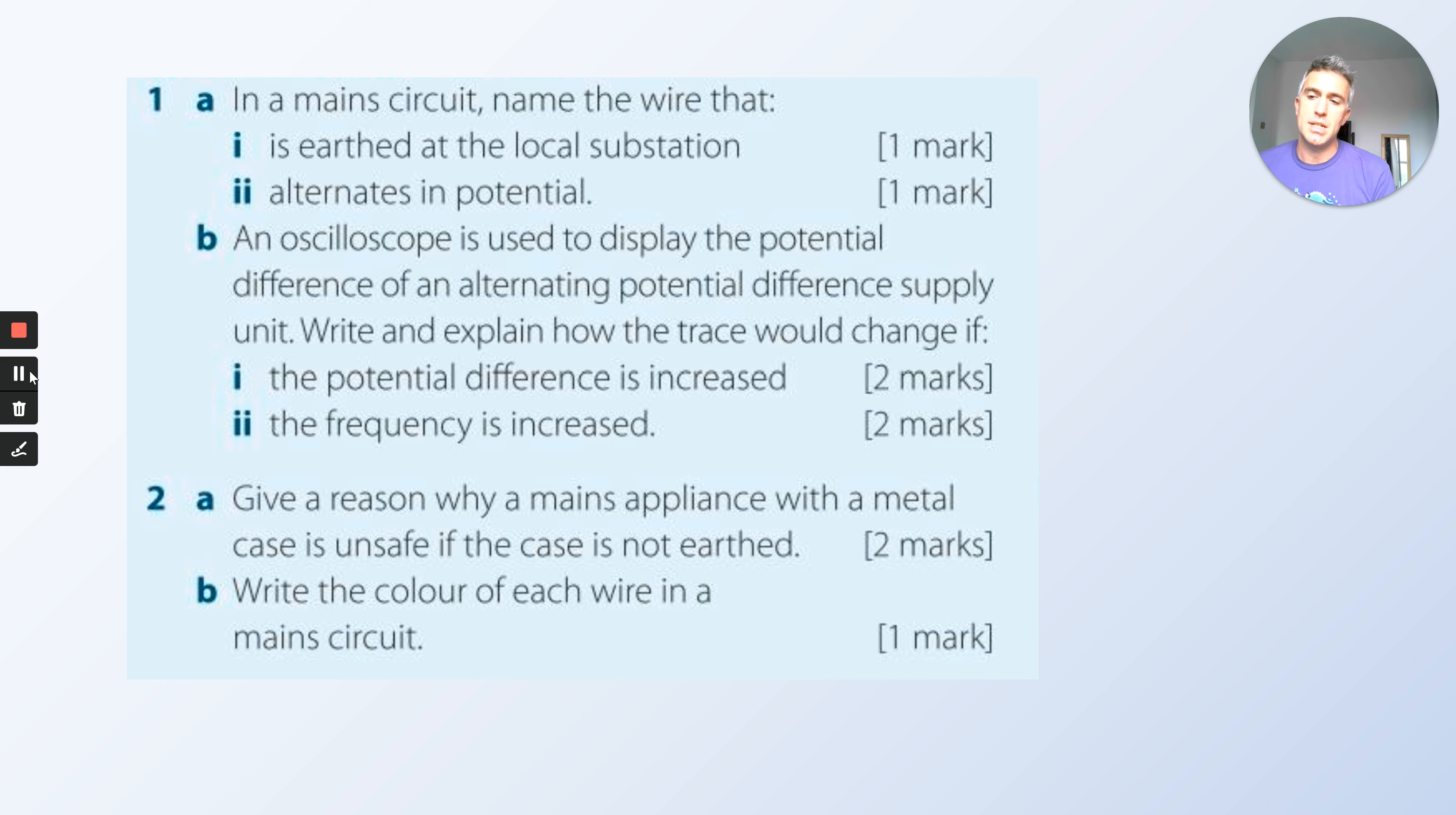An oscilloscope is used to display the potential difference of an alternating potential difference supply unit. Write and explain how the trace would change if the potential difference is increased and if the frequency is increased.